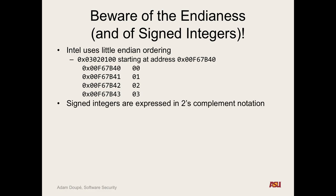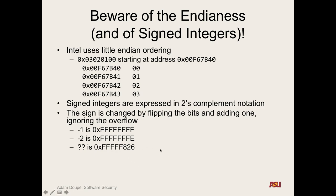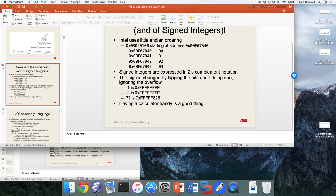How are signed integers stored? In two's complement notation — flip all the bits and add 1. Negative 1 is stored as all F's. Figure out how to use programmer mode on your calculator — it comes in really handy. And that'll do it for today.